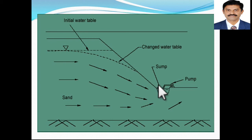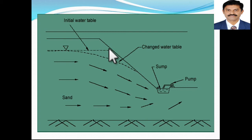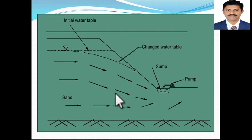There is a sump, and the initial water table — when it is drained, the water collected in the sump is pumped out, thereby lowering the ground water table. The initial ground water table was here, and when the water is pumped out from the sump, the water table comes down and water moves to this sump. This site consists of sandy soil.